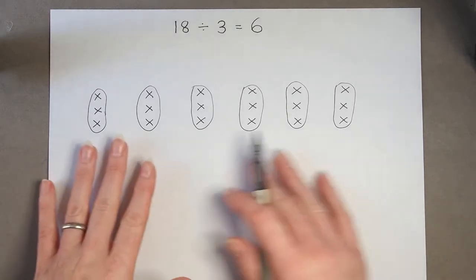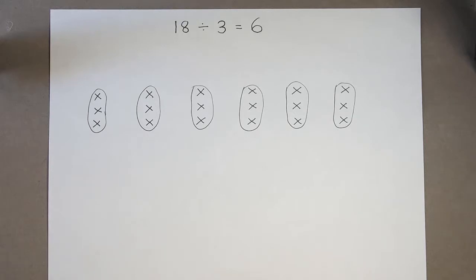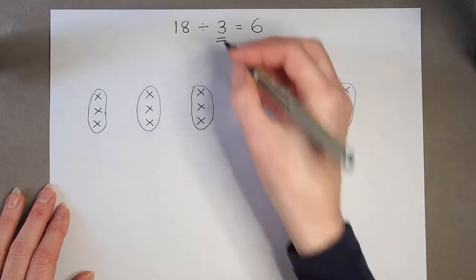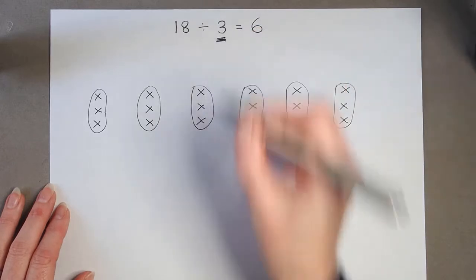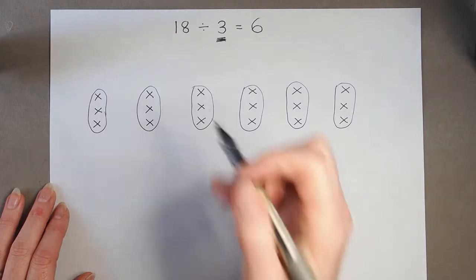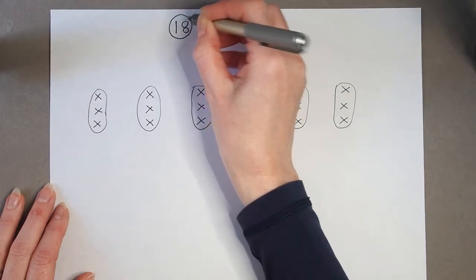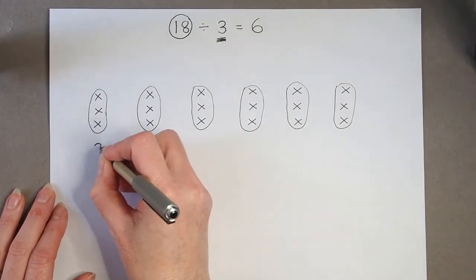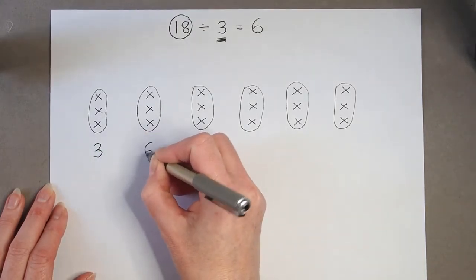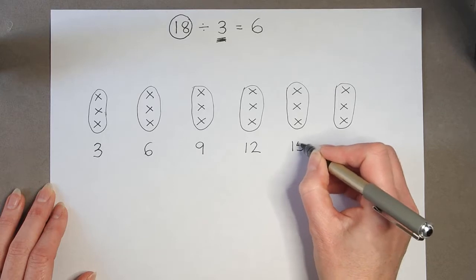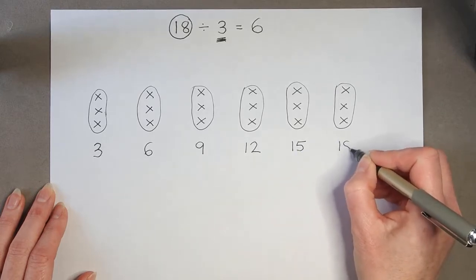Now if I don't want to record that, because when we get bigger numbers, that's lots of crosses to be keeping track of. We could think about counting in 3's. This is telling us to count in 3's. And we need to count in 3's until we get to our starting number here of 18. So if we look at what we've done, we can count in 3's. 3, 6, 9, 12, 15, 18.